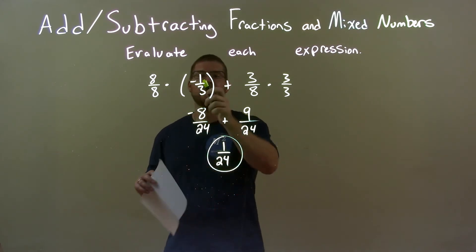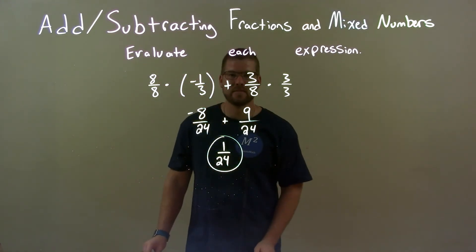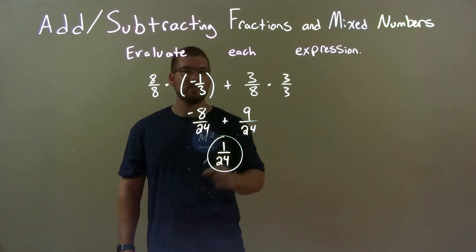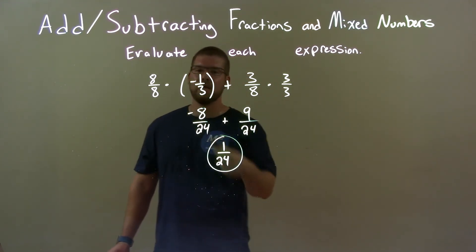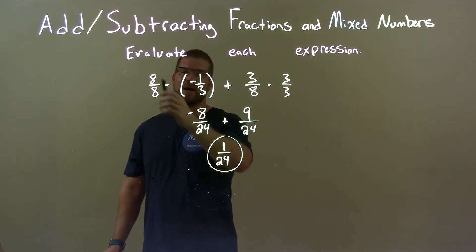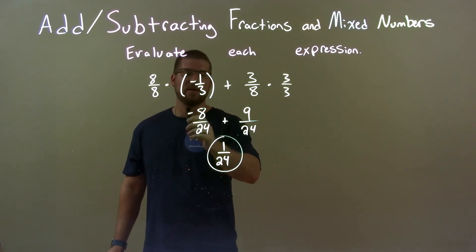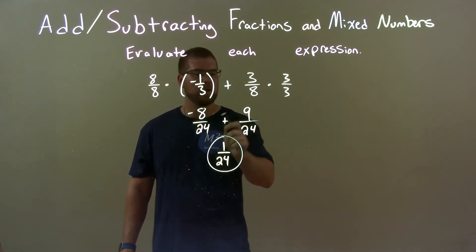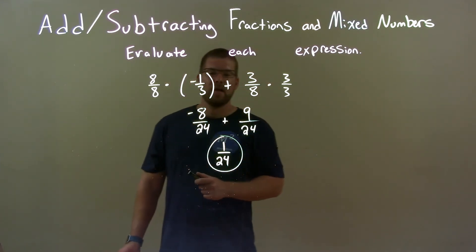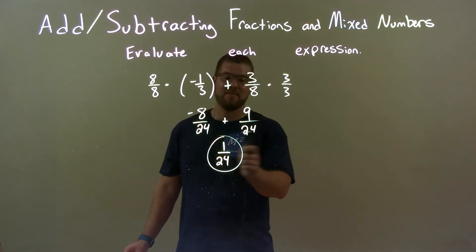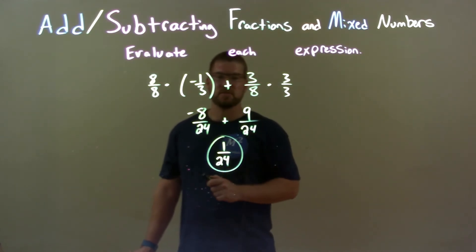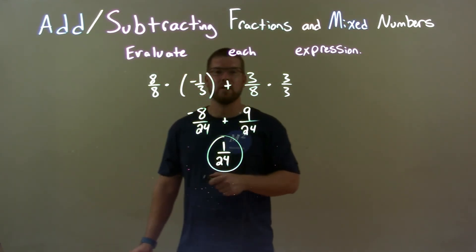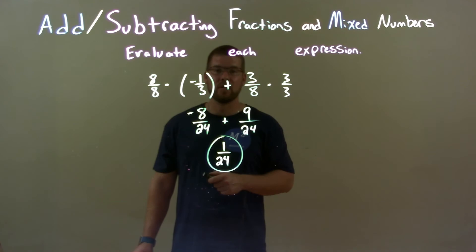Quick recap: we were given negative one-third plus three-eighths. They don't have the same base, so we make them have the same base. Multiply three-eighths by three over three, and negative one-third by eight over eight. That gave us negative eight over twenty-four, plus nine over twenty-four. Then, since we have the same denominator, we just add the numerators. We have a positive one on top, and the denominator is still twenty-four. So one over twenty-four is our final answer.